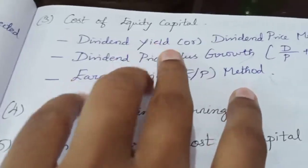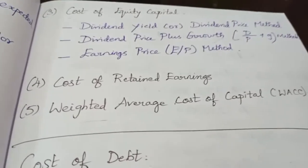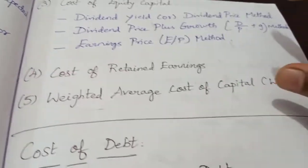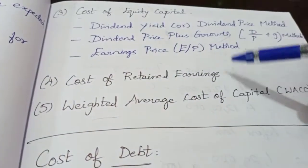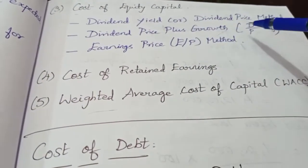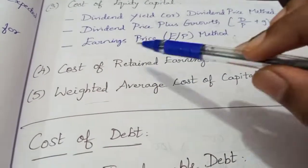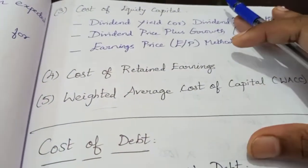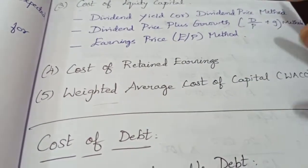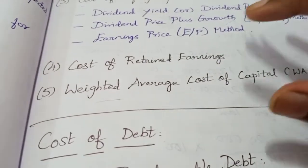Next, we move on to cost of equity capital. In the cost of equity capital, after paying interest and tax, and after paying preference shareholders their dividends, the balance goes to equity shareholders. The methods we are going to discuss are: dividend price method, dividend price plus growth method, and earnings price method. After that, cost of retained earnings — part of profit kept for business expansion purposes.